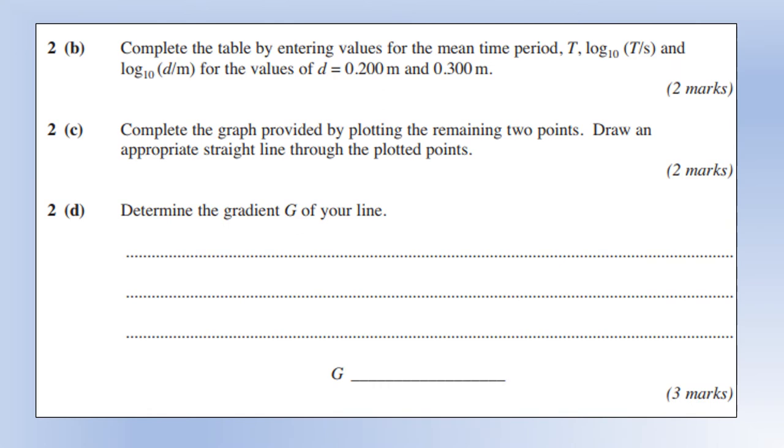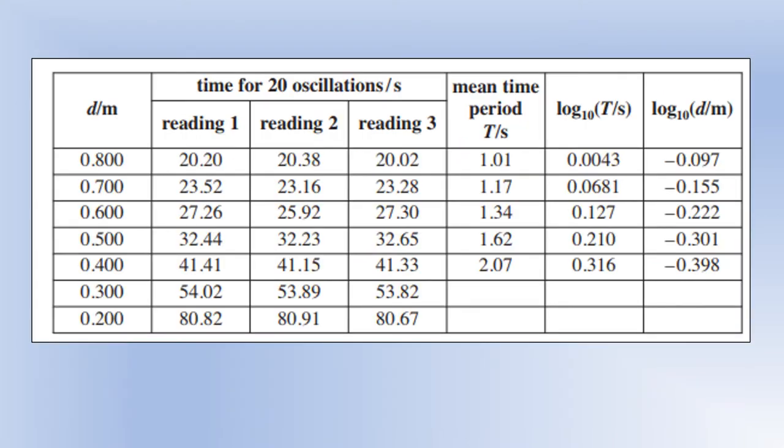Okay, so complete the table by entering values for the mean time period, log t and log d, for where we have the blanks. So if we go to a copy of the table, I'm just going to do this on my calculator as we go through. So first of all, we need to find the average time for 20 oscillations. Okay, fine. Divide that by 20, I reckon you get 2.69 blah blah, that rounds to 2.70, making sure we are being consistent. So all of these have been given to three significant figures, so we should do the same.